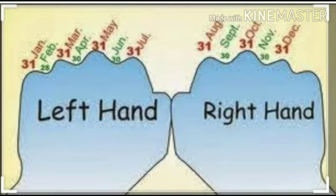August, upar curve mein hai, it has 31 days. September, 30. October, 31. November, 30. And December, 31 days.